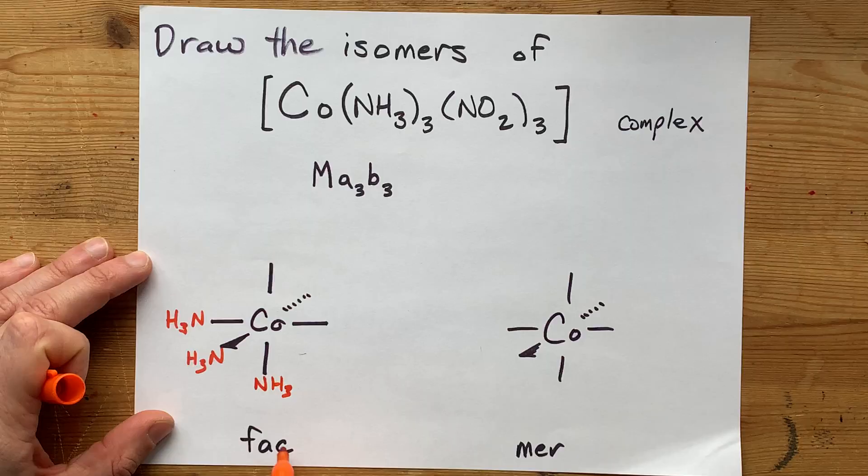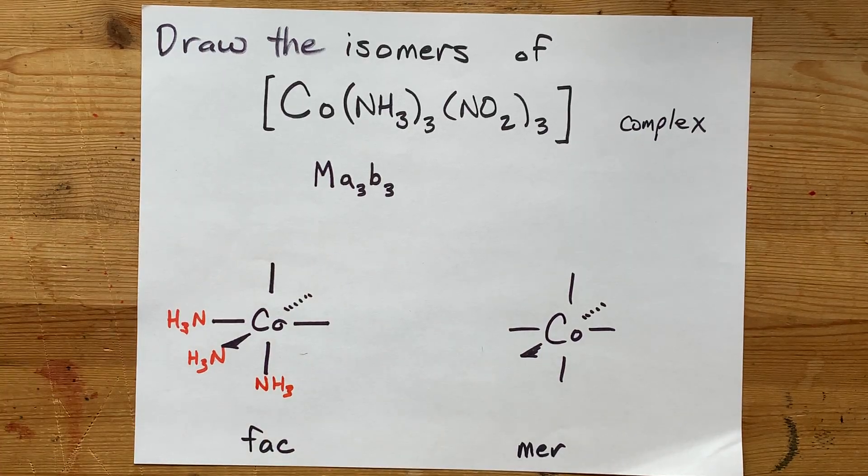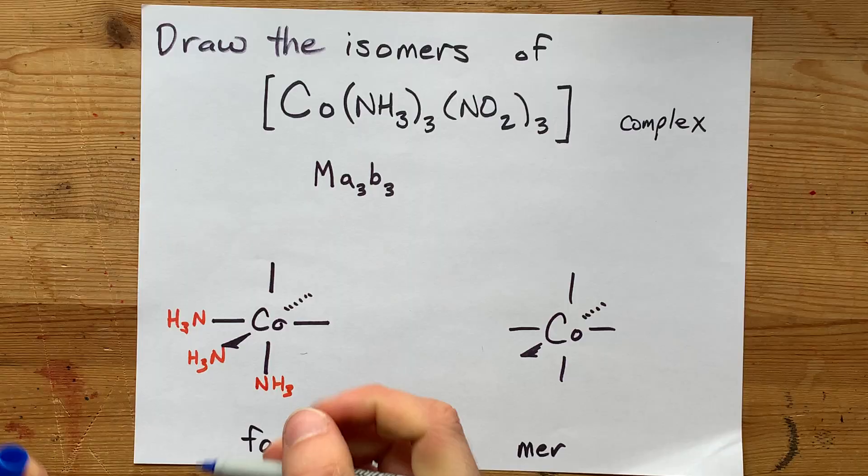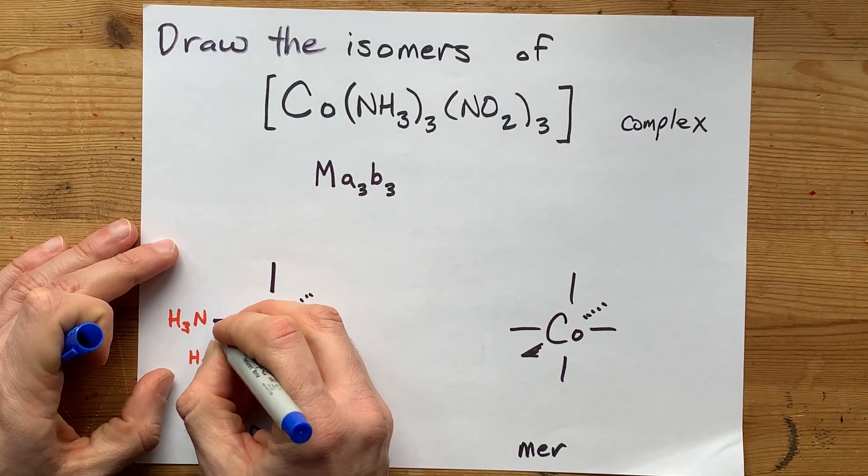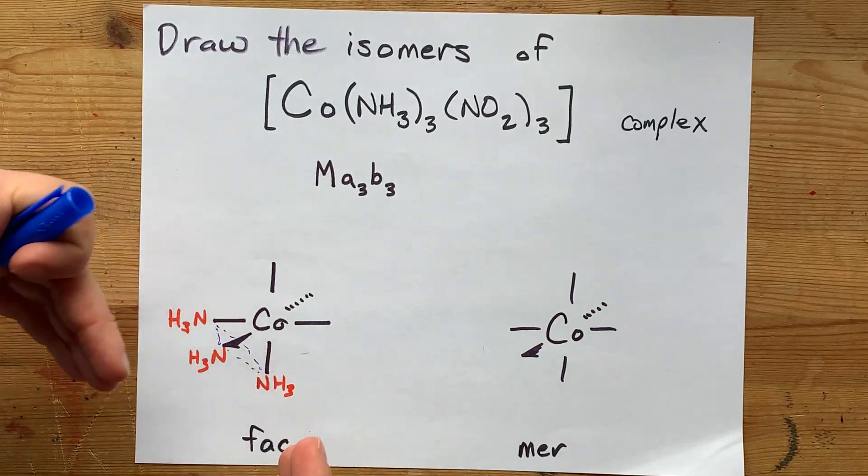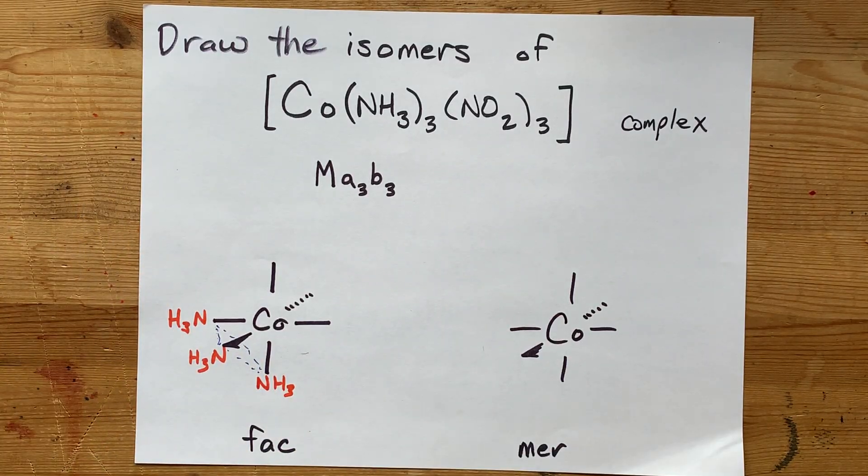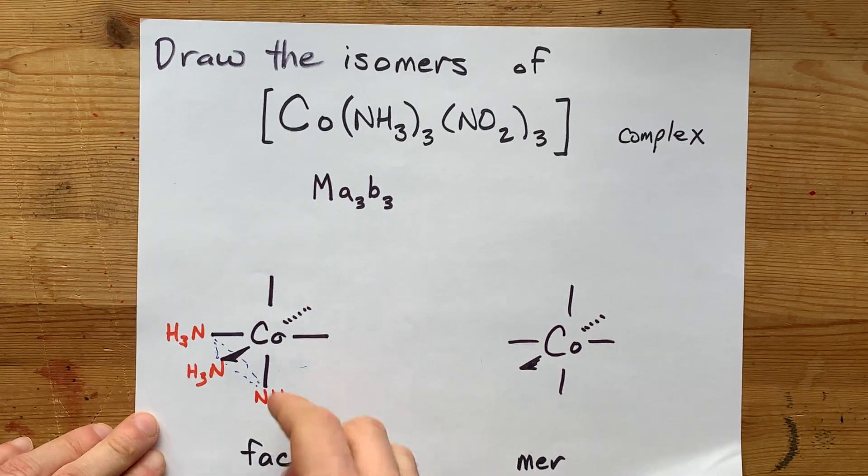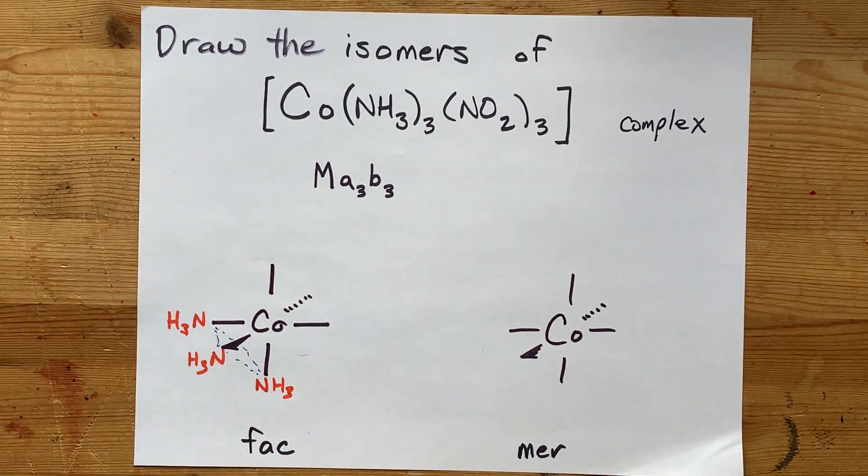That's what makes it a FAC isomer. It's called FAC because if you try to connect those three together, you end up with a single plane that makes a face of the octahedron. You don't have to see that. You just have to know that FAC has them all clustered on one side.